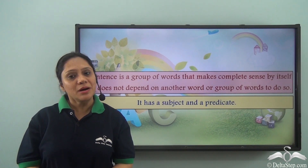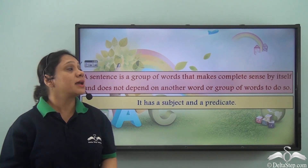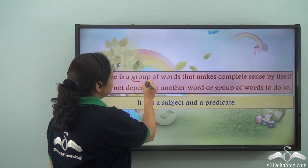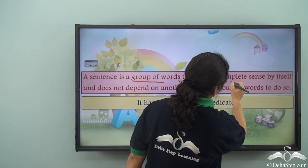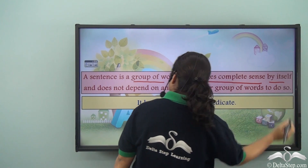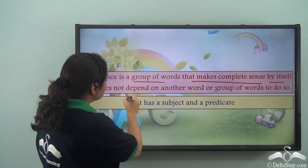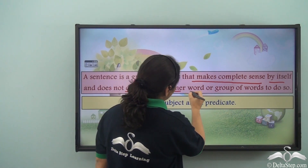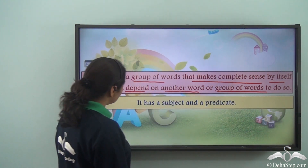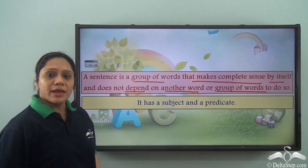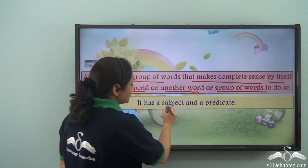Do you remember what a sentence is? It is a group of words that makes complete sense by itself and does not depend on another word or group of words to do so. It has a subject and a predicate.